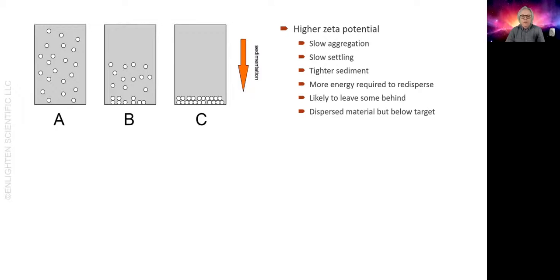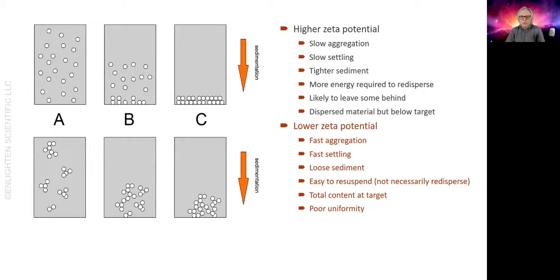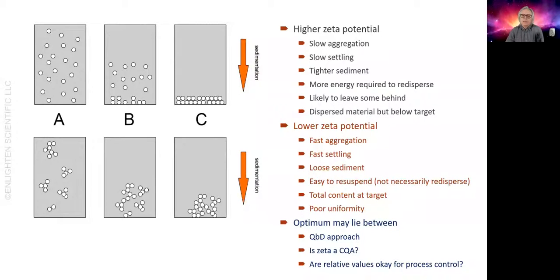It's highly probable you'll leave some of the sediment behind and fail your quality control test. What about low zeta potential? You'll get fast aggregation limited by diffusion and concentration of the particles. Aggregates that form will settle faster than individual particles, forming a loose fluffy sediment that will readily resuspend, but it doesn't necessarily redisperse to the original primary particles. For this product it may not matter as long as the patient can get the entire dose.